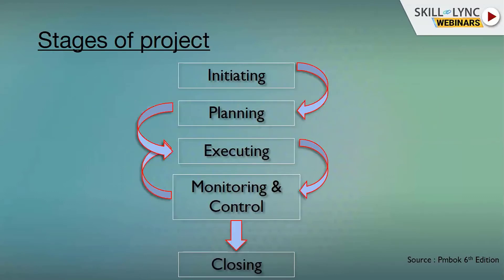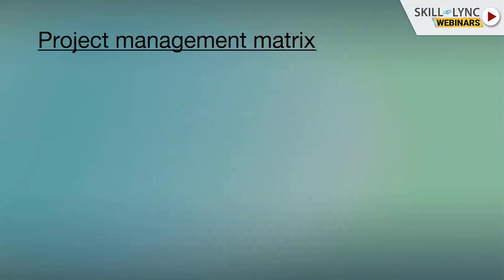According to PMI's PMBOK, a project is divided into five phases: first is initiating, then planning, then executing — which goes hand in hand with monitoring and control — and finally closing. There are various steps involved in all these five stages, and today we'll be discussing just one of those.